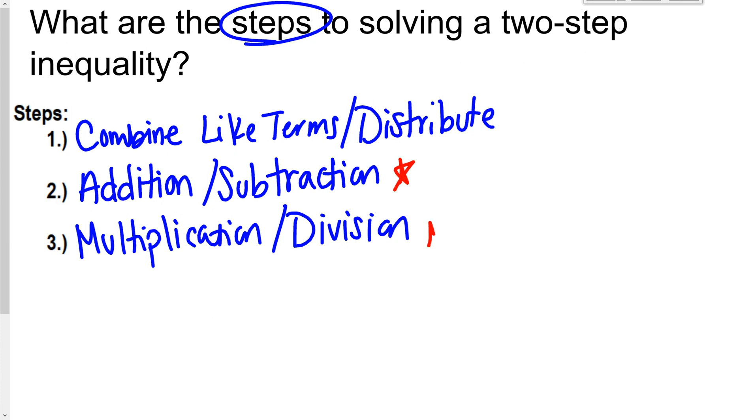So these two are our biggest important ones because those will happen every single time in a two-step. This one just depends if there. You may not always do step one. Again, if you do have to combine like terms or distribute, it might be there, but you'll always have to do two and three.